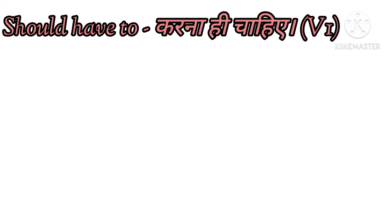Now let's understand how to use 'should have to' in a sentence. The sense will be karna hi chahiye. Whenever we use 'to' as a preposition, we always end up using the word's first form alongside it. Examples: usse wahan jana hi chahiye, mujhe aap se milna hi chahiye, usse yeh kitab padhni chahiye. In this sense we can use 'should have to' in a sentence.